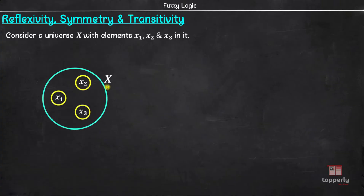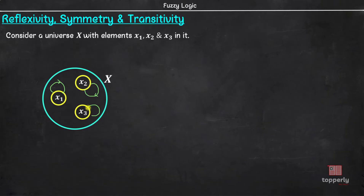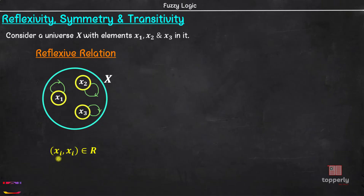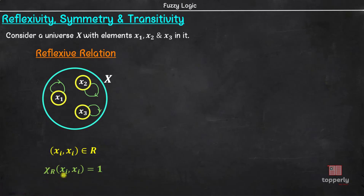Consider a universe X with elements X1, X2, and X3 in it. Let us define relations between these elements using graphs. Suppose every element in universe X is related to itself only, then this can be graphically represented as loops — the origin and end point of the relation are the same elements. Such a relation is called a reflexive relation. Therefore, a relation R in a crisp universe X is reflexive if the ordered pair (Xi, Xi) belongs to R, or equivalently, the membership value of ordered pair (Xi, Xi) is equal to 1 in the relation R.